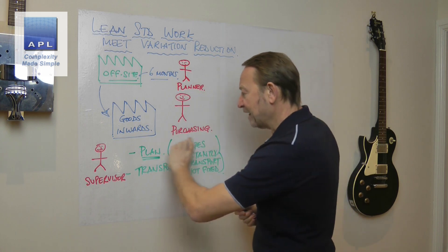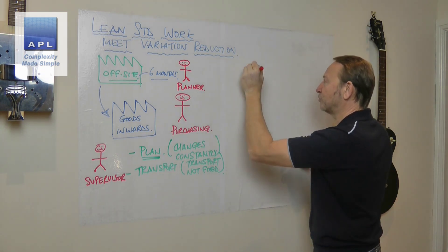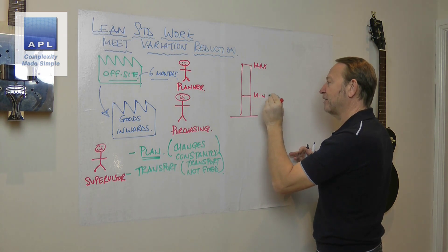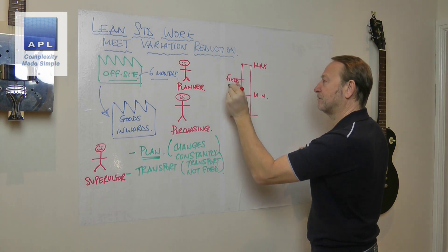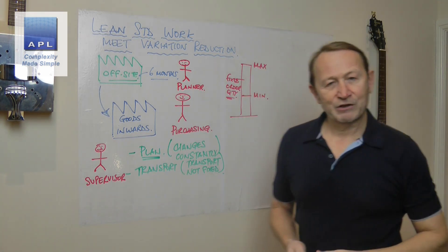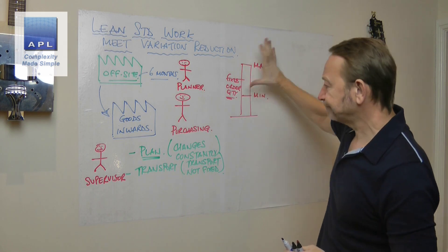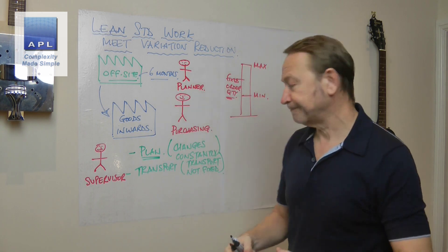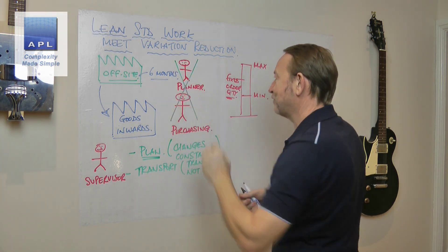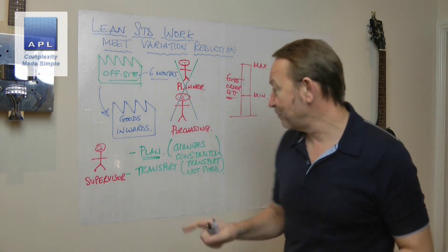What have we done in order to eliminate variability? We're going to put a pull system in for runner material. We're going to have a maximum, a minimum, and a fixed order quantity - a fixed amount to bring the material on site. We identified about five or six raw materials we can do this with, and we decided a maximum, a minimum, and the order quantity. We've taken these two people out of the decision making.